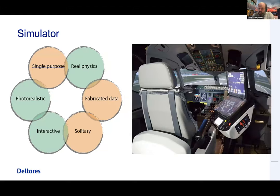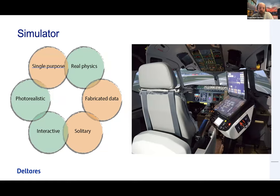Something like a flight simulator is also not quite a digital twin because it's more single purpose — you can't use it for a helicopter, for example. It's also quite solitary, though it is very interactive. What also makes a difference is that it doesn't use real data — it typically contains fabricated data used for training purposes. Video games have some similarities with digital twins but typically don't contain realistic physics or real-world current data.